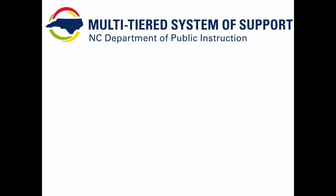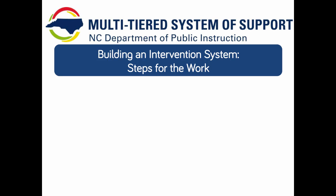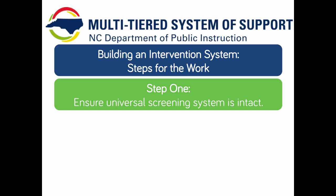Hello. This short video will introduce you to the first step in designing an intervention system: ensuring that a universal screening system is intact. Let's step back for a moment and recall that in order to begin supporting a well-defined intervention in predictable areas of need, we need a systematic way to determine the needs in our schools and districts. A systematic way to determine overarching needs can be described as a universal screening system.